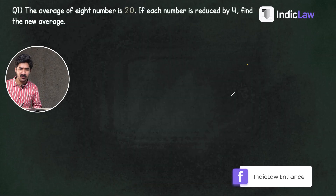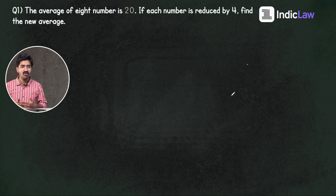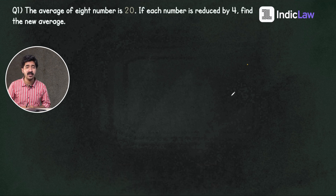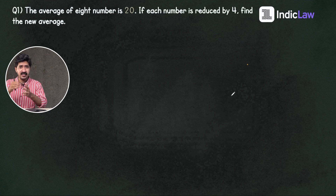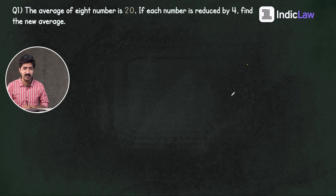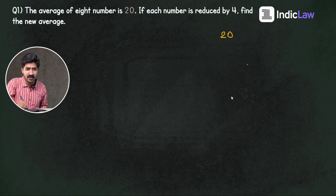The average of 8 numbers is 20. If each number is reduced by 4, find the new average. That is what we are doing. Let's say you have an average of 4, going from 0 to 12.